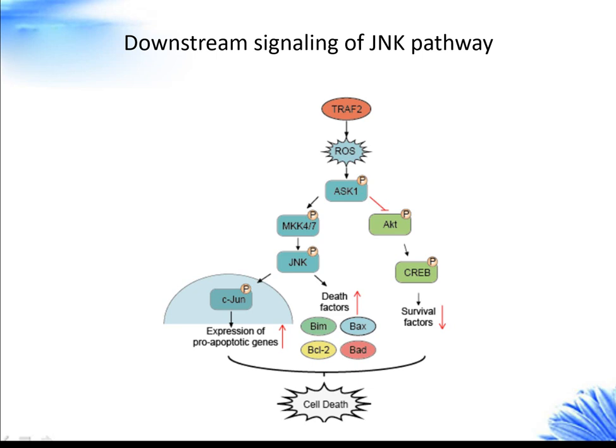The JNK pathway is generally a death signaling pathway. It controls the cell response to harmful extracellular stimuli such as inflammatory cytokines, UV irradiation, and gamma irradiation.